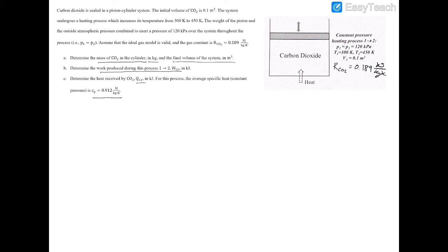We're looking for the mass of the CO2 in kilograms, the final volume V2 in meters cubed, and the heat received from process 1-2, Q12, in kilojoules.